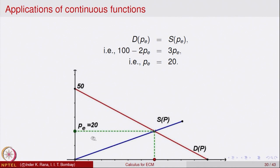Geometrically, solving this system of two equations gives the price P_e = 20. The demand curve D(P) = 100 − 2P is a linear curve, and the supply S(P) = 3P is a line passing through the origin. Where these two graphs cross is the point of equilibrium P_e — that is the common point where demand equals supply.